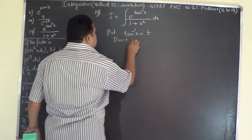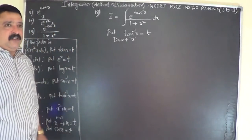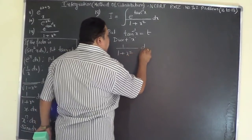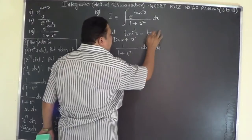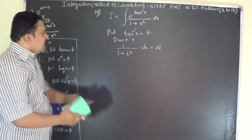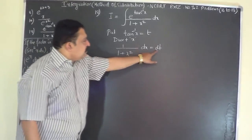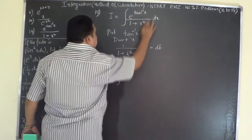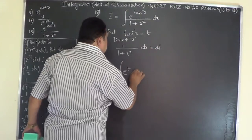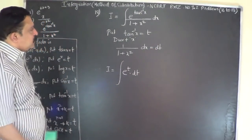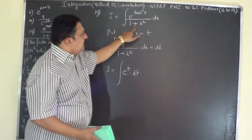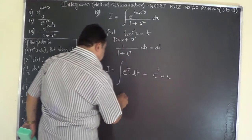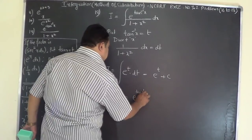Differentiating with respect to x: the differential coefficient of tan inverse x is 1 over 1 plus x squared, so 1 over 1 plus x squared dx equals dt. Therefore dx by 1 plus x squared can be replaced by dt. The problem becomes I equals integral of e to the power of t dt. The integration of e to the power of t is e to the power of t plus c, so substituting back, the answer is e to the power of tan inverse x, plus c.